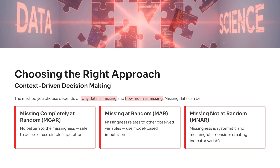1. Missing completely at random, or MCAR. There's no pattern behind the missing data. In this case, you can safely delete rows or use simple imputations without biasing the results.